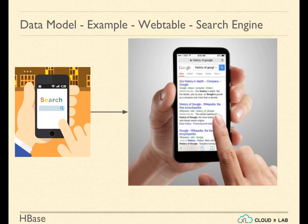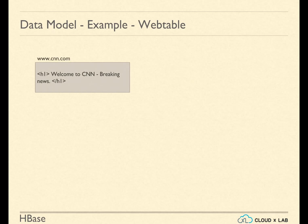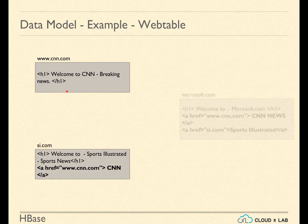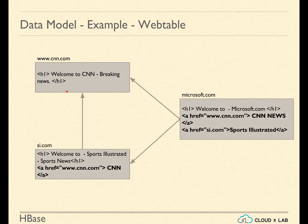Search engines need to find and maintain who is linking to whom and with what name. For example, www.cnn.com has some HTML content and is being referred to by si.com as CNN and by microsoft.com as CNN News. Si.com has some content which is being referred to by microsoft.com as Sports Illustrated. This relationship can be represented in a graph.